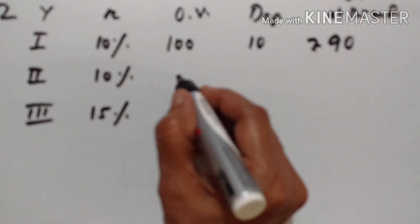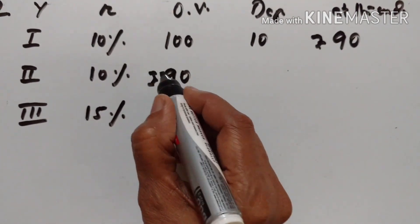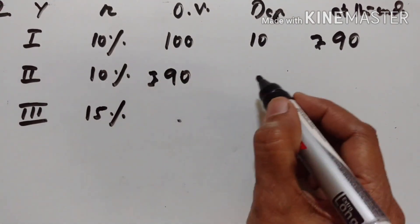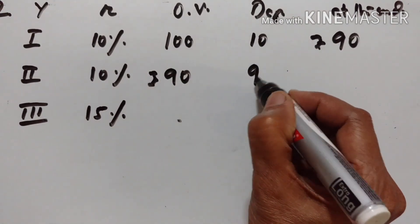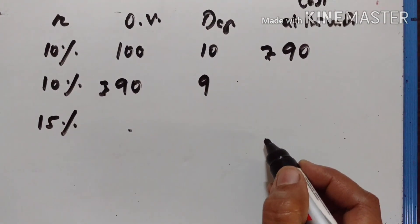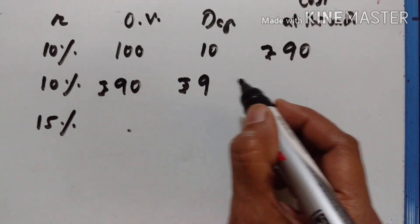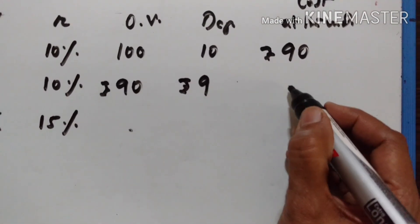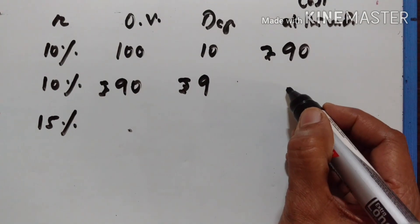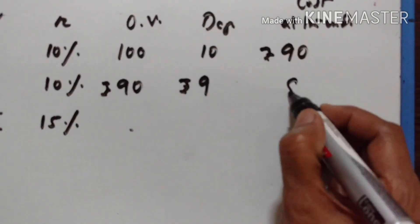This becomes the original value for the second year. 10% of 90 is 9, so the depreciation is 9. The cost at the end of the second year is equal to Rs. 90 minus 9, that is Rs. 81.